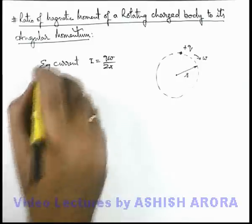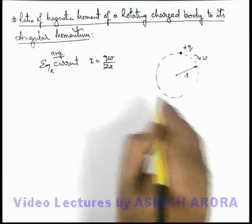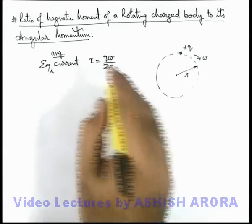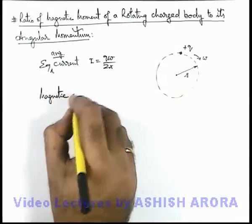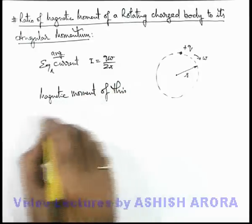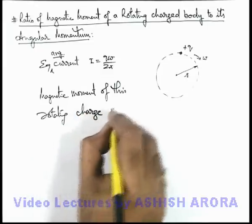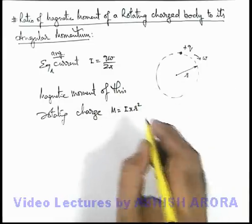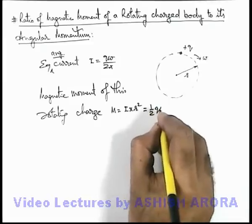This is the equivalent average current because the charge is not present everywhere — it is continuously rotating and producing a current equal to qω/2π. Corresponding to this current, the magnetic moment of this rotating charge can be given as M = iπr² (current multiplied by the enclosed area). Substituting the value of current, this becomes M = ½qωr².